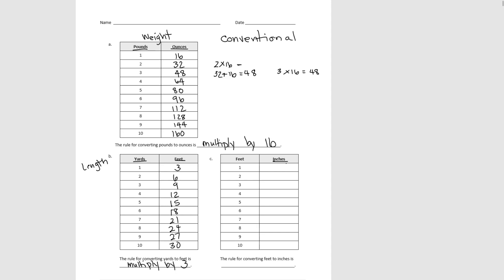We have one final table: feet to inches. What we need to know is that there are 12 inches in a foot. In 2 feet it would be 2 times 12, or 24 inches. We can continue by multiplying, or we could say if 2 feet is 24 inches, then 12 more would be 36, and 12 more would be 48. Pause the video and finish this table.